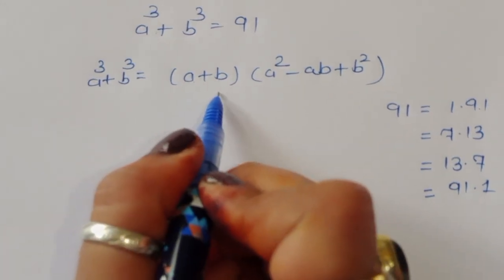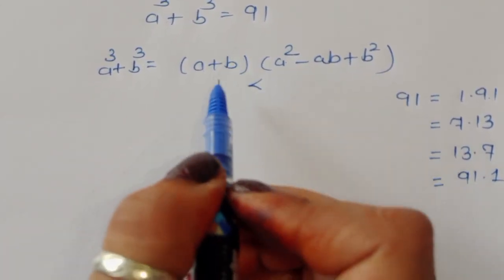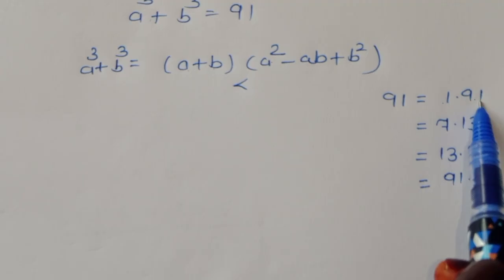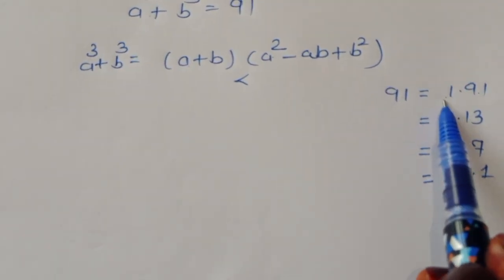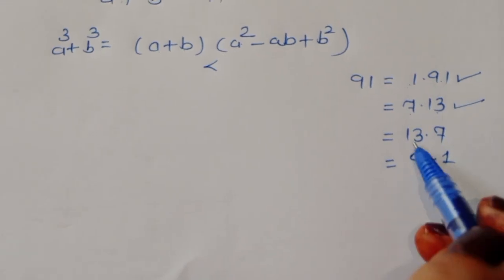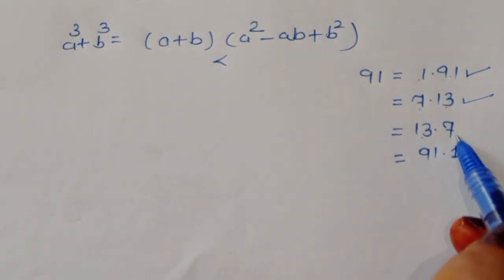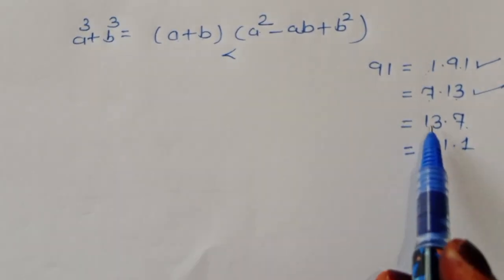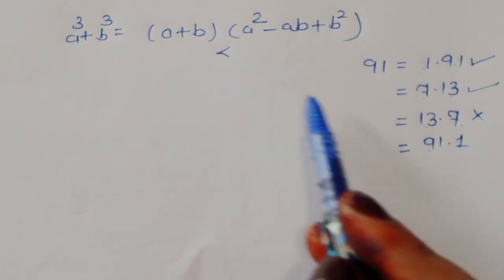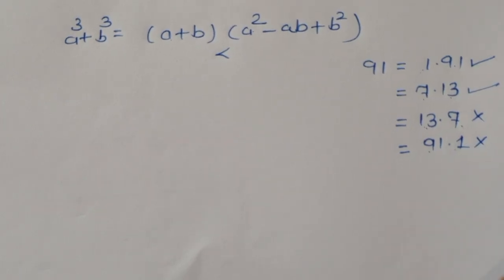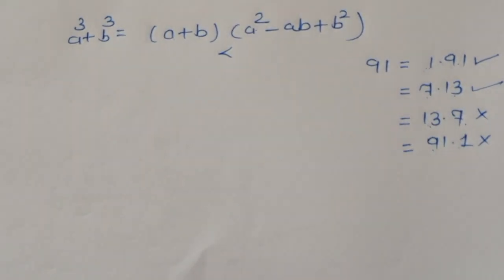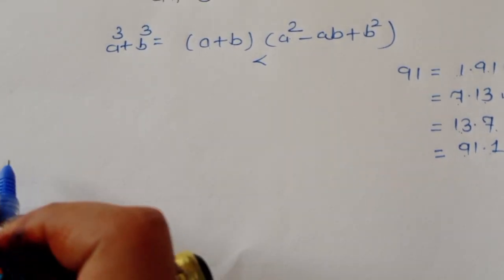We know that (a + b) must be less than (a² − ab + b²). So (a + b) < (a² − ab + b²). For 1 × 91, a + b = 1 is less than 91 — this is valid. For 13 × 7, a + b = 13 is greater than 7, so this is rejected. For 91 × 1, a + b = 91 is greater than 1, so this is also rejected. We have only two valid cases: 1 × 91 and 7 × 13.